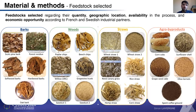During this project, 22 different biomasses were collected and selected according to French and Swedish industrial partners. That's why we have Scots Pine bark. We regrouped these 22 biomasses in four groups: barks, wood, straws, and also agro byproducts, as we have lots of products like this in France. That's why we focus on corn cobs, for example, and also the straws.